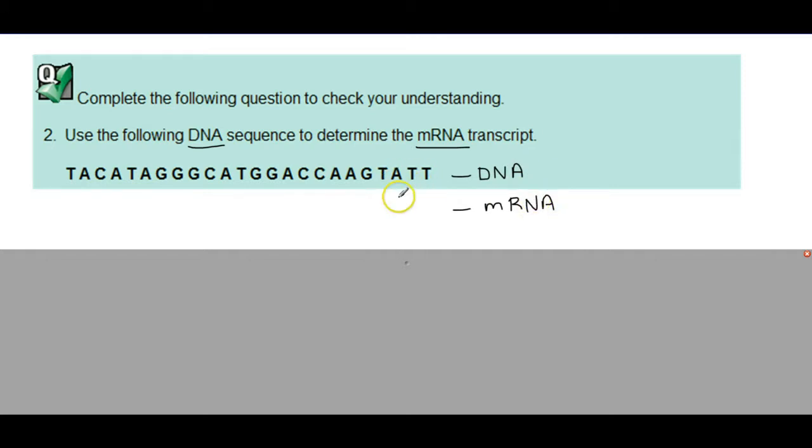Think about the only difference here. We know that each of these has a complementary nitrogenous base that it always bonds with, right? So that's all we're doing - matching up what complements this. Except the only extra rule here is that in mRNA, where you would want to put a T, you have to put a U. So U instead of T.